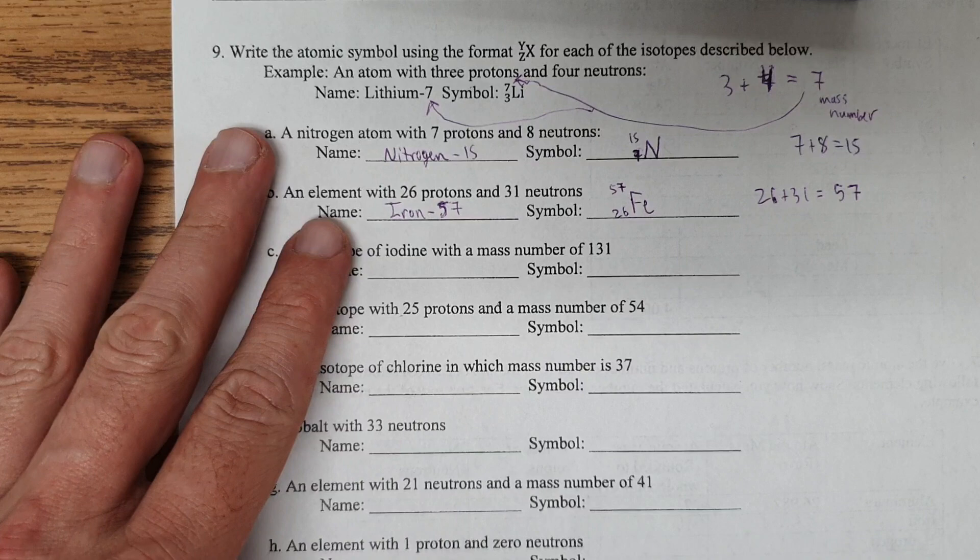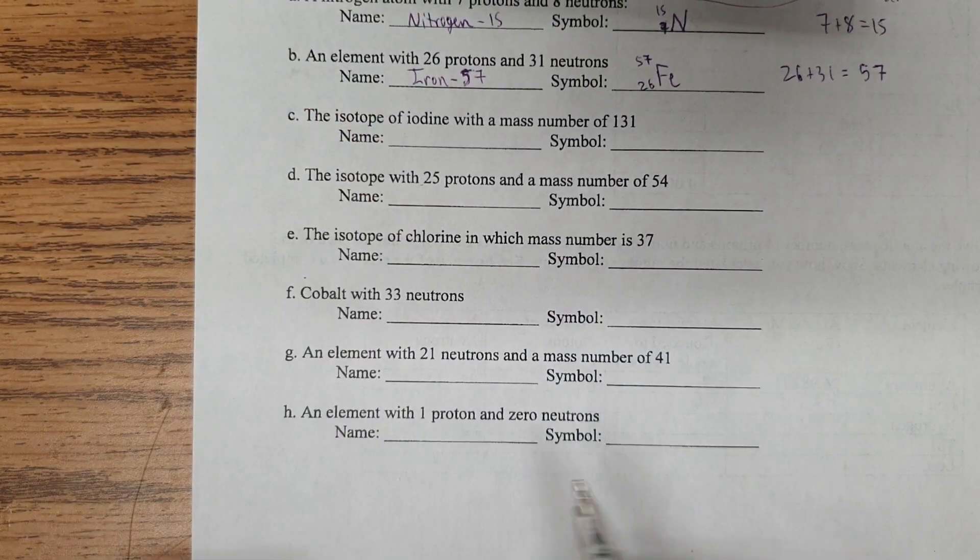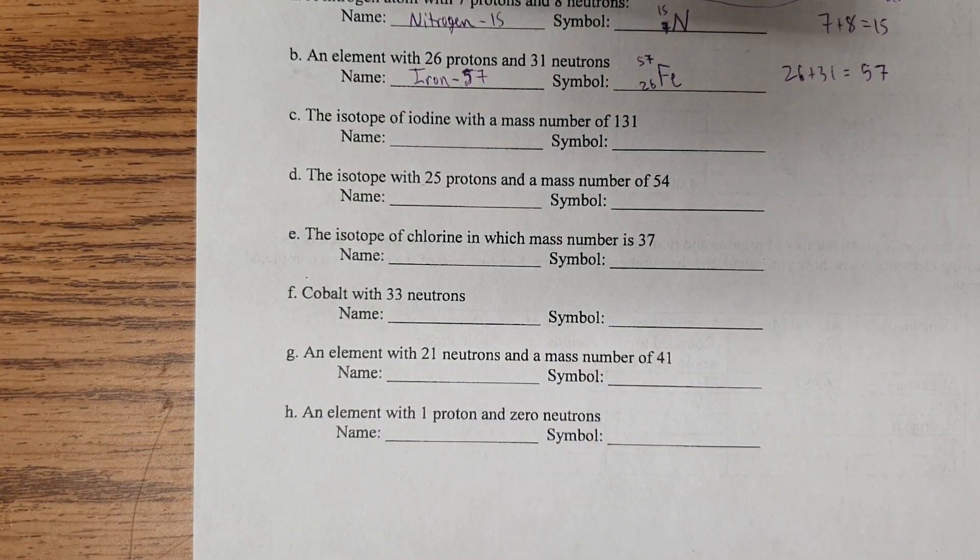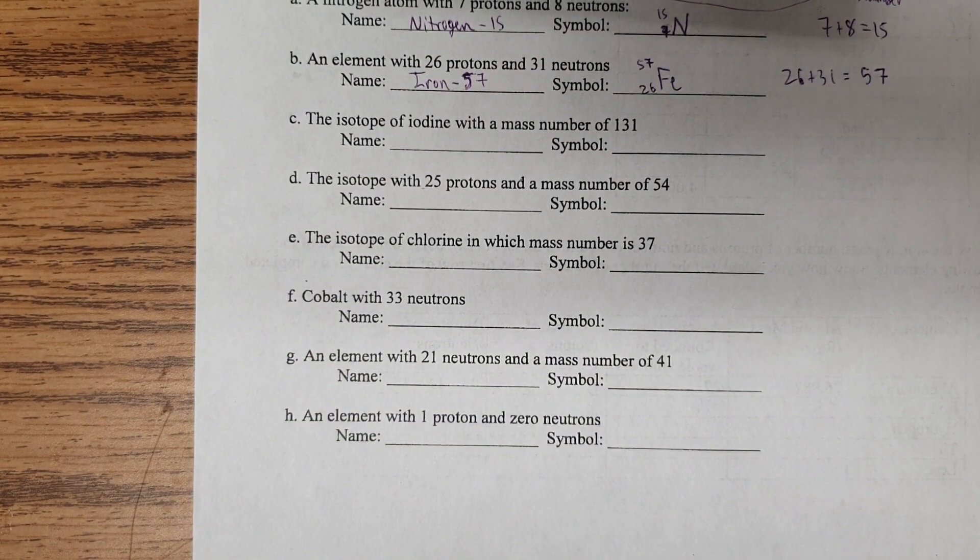Just to confirm, element with one proton and zero neutrons, yes, that really is possible. You can have zero neutrons. But remember, it's proton that determines the element, not neutrons. All right, that should take care of it.